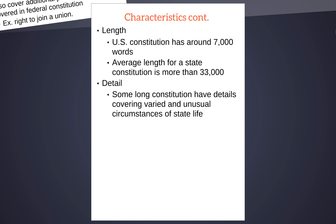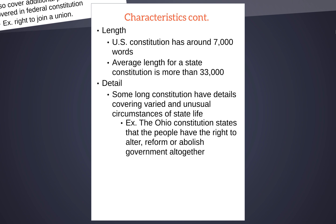Some state constitutions have various details covering very unusual circumstances of state life. For Ohio, we have specific provisions for the Great Lakes, and things that outline travel on the Ohio River — which, despite the misleading name, is totally and completely owned by the state of Kentucky. Ohio owns no part of the Ohio River, ironically, but we are allowed to do certain business on that river with Kentucky's permission. The Ohio Constitution also states that you have the right to alter, reform, or abolish the entire government — much like when we replaced the Articles of Confederation, but through more legal channels.